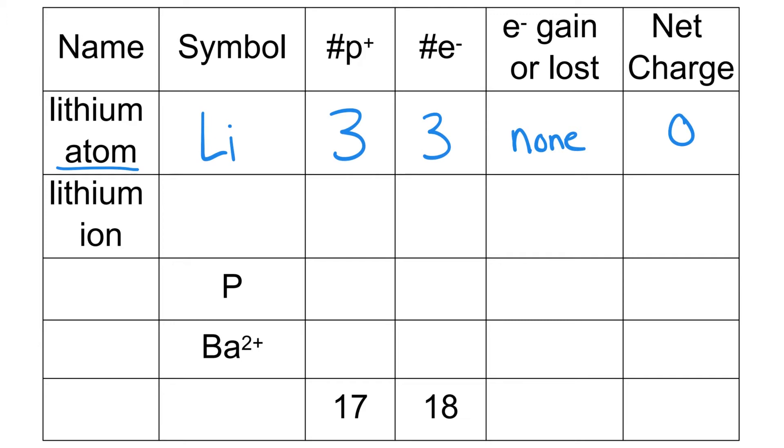For the second example though, I'm talking about the lithium ion, as you can see here. With the lithium ion, I need to again go look at my periodic table and I see that there are, well lithium, so there are 3 protons. That's not going to change, but the amount of electrons is.